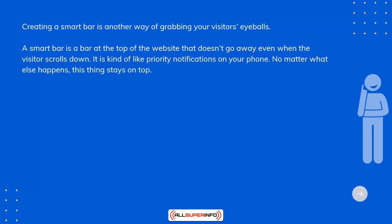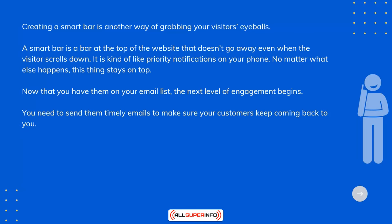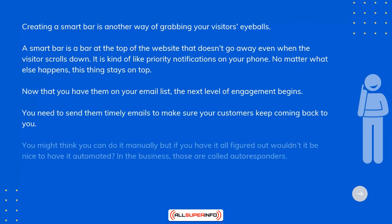Now that you have them on your email list, the next level of engagement begins. You need to send them timely emails to make sure your customers keep coming back to you. You might think you can do it manually, but if you have it all figured out, wouldn't it be nice to have it automated? In the business, those are called autoresponders.